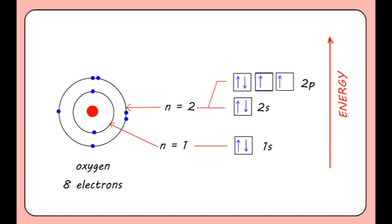We would write the electronic configuration of oxygen as 1s2, 2s2, 2p4. The 1s representing the 1s subshell. The 2 superscript representing the two electrons contained in the 1s subshell. The 2s representing the 2s subshell. The 2 superscript representing the two electrons contained in the 2s subshell. The 2p representing the 2p subshell. And the 4 superscript representing the four electrons contained in the 2p subshell.